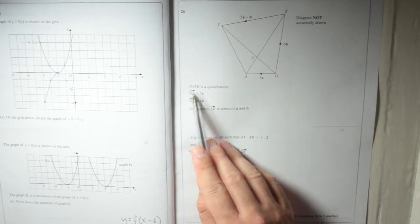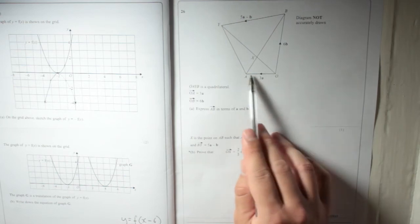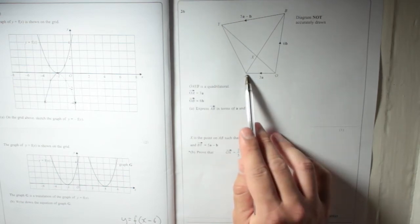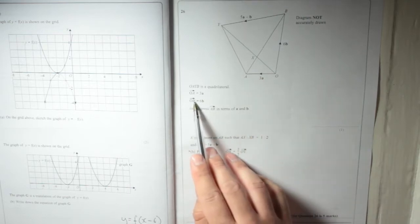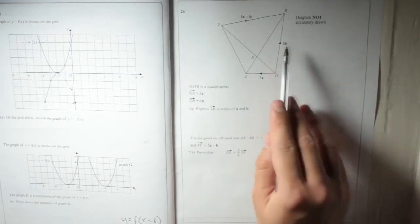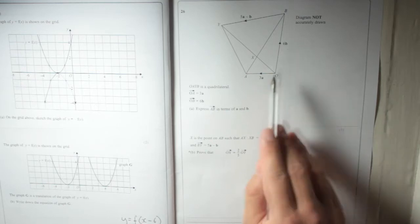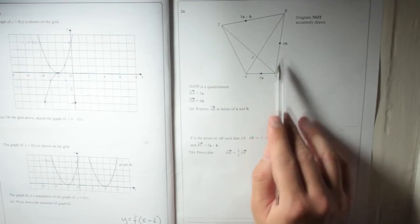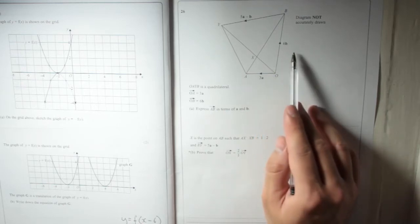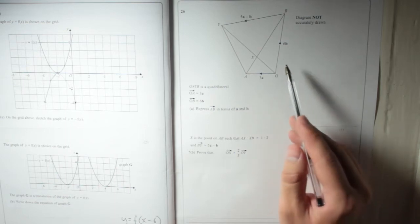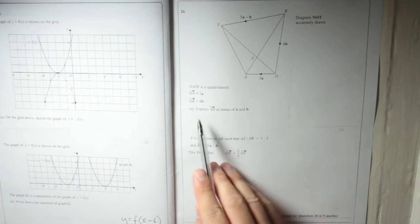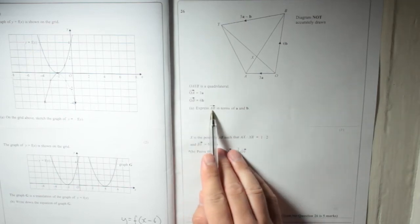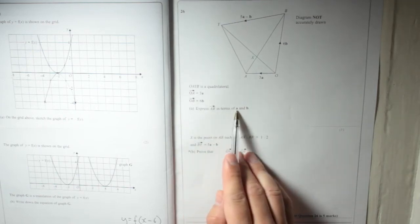OA, that's from O to A, is the vector 3A, and OB is equal to 6B. Notice that A and B are both in bold. If we need to write those things down, we generally will just underline them, rather than trying to do a bold letter. So, first, express AB in terms of A and B.